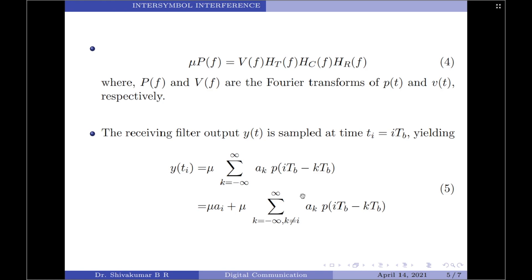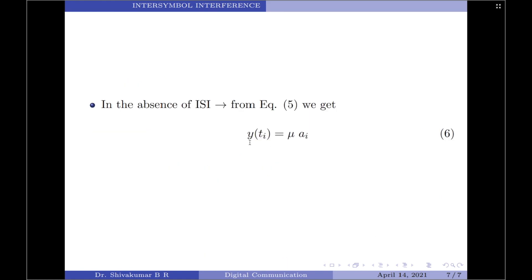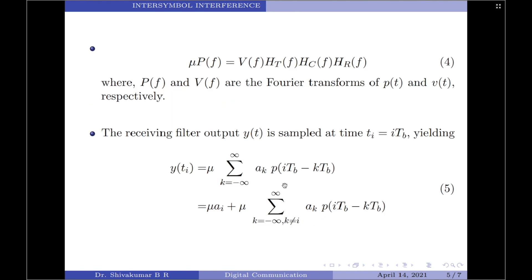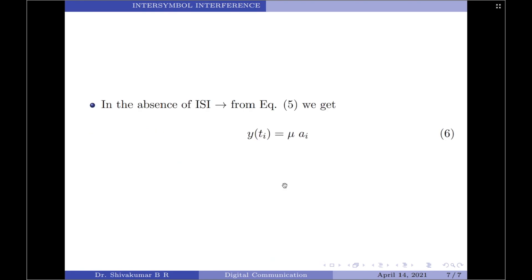Therefore, what one must do is eliminate the second term on the right-hand side of equation 5, to ensure ISI does not exist. In an ideal scenario with no ISI, equation 5 reduces to Y(t_i) = μ · A_i. So, if you are asked to design the transmitting and receiving filters, the foremost objective should be to minimize the effects of inter-symbol interference and thereby deliver digital data to its destination with the smallest error rate possible. That concludes the discussion on inter-symbol interference. If you like this video, please press the like button and subscribe to the channel for more videos on digital communication. Thank you for watching.